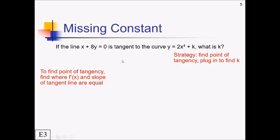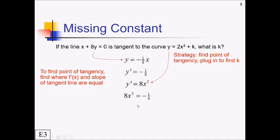Pause the video and take a moment to find the slope of the tangent line and the derivative of the function. The fastest way is to put the line in y = mx + b form — subtracting x and dividing by 8 gives y equals negative 1/8 x, so the slope is negative 1/8. For the derivative, y′ equals 8x³ (the constant k differentiates to zero). Setting 8x³ equal to negative 1/8 and solving: dividing both sides by 8 gives negative 1/64, then cube-rooting gives x equals negative 1/4.